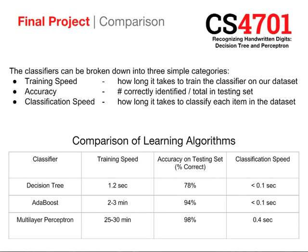The classifiers can be broken down into three simple metrics: training speed, or how long it took to train the classifier; accuracy, the number of correctly classified points over all points classified; and classification speed, how long it took to classify each item. The decision tree was the fastest to train but provided the poorest accuracy. The Adaboosted decision tree achieved much higher accuracy at the expense of training speed while maintaining similar classification speed. The multi-layer perceptron took the longest to train but provided the highest accuracy at 98%, with only a modest increase in classification time.